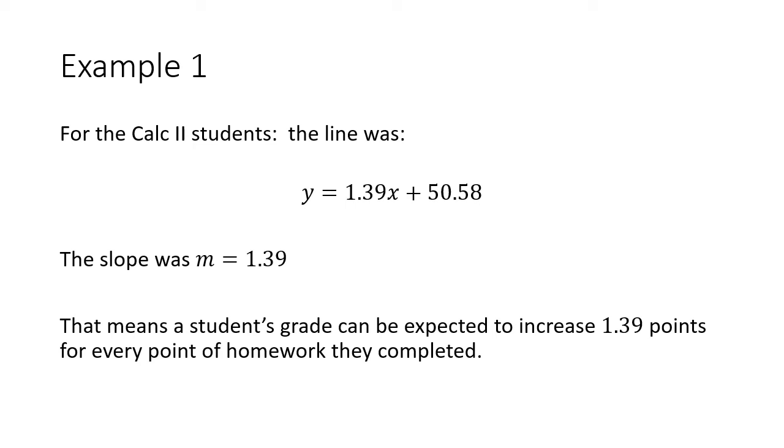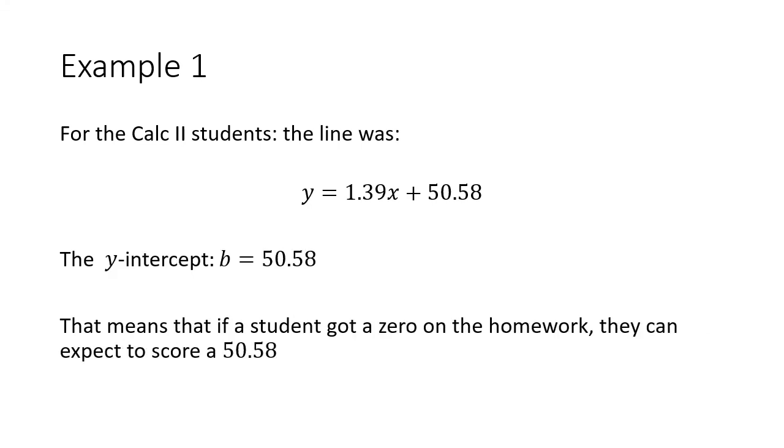Now for my Calc 2 students, I use technology and I found that line was y = 1.39x + 50.58. What do those numbers mean? The slope is 1.39. That means that for every point increased on the homework, that student could expect a 1.39 point increase on their exam.